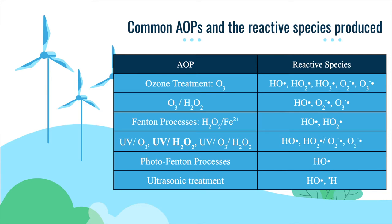The table here shows the common AOPs with the reactive species produced from each reaction. In this study, we will be studying the UV hydrogen peroxide advanced oxidation process, as it is one of the most promising AOP systems and economically practical, which will be discussed further in the subsequent chapters.